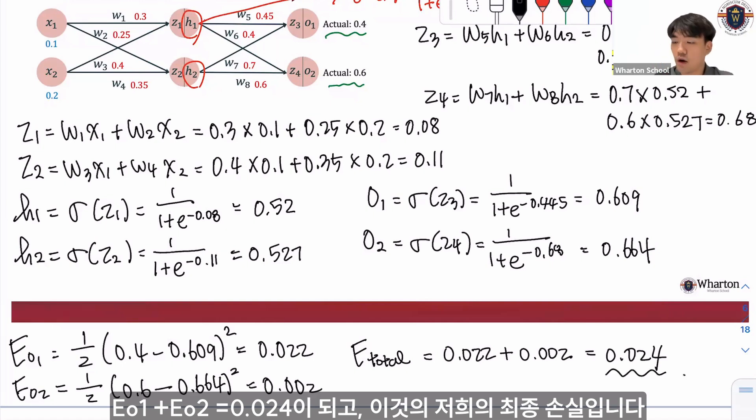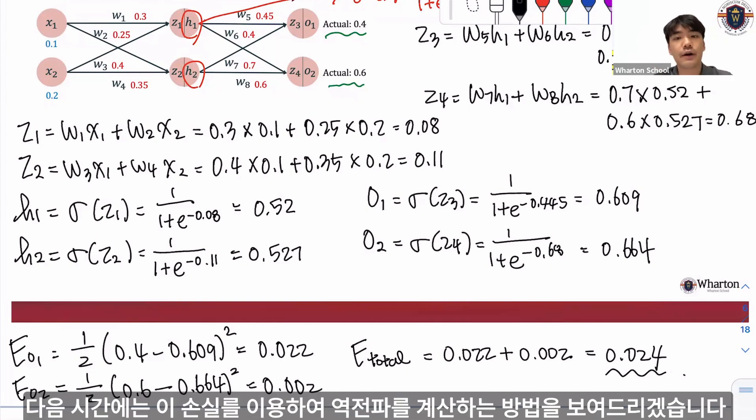This is the total loss generated by this forward propagation in this neural network. I'll show you how to calculate back propagation next time. See you again.